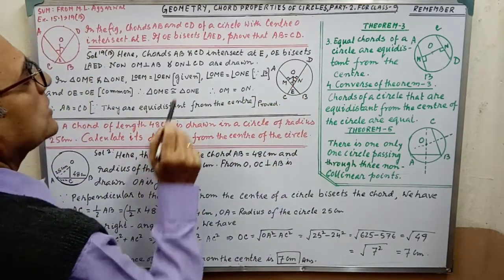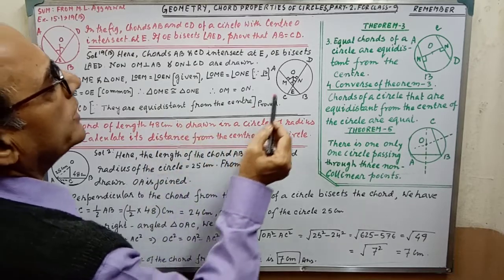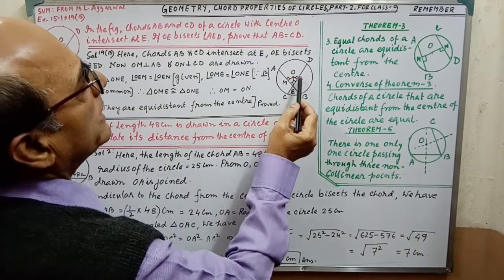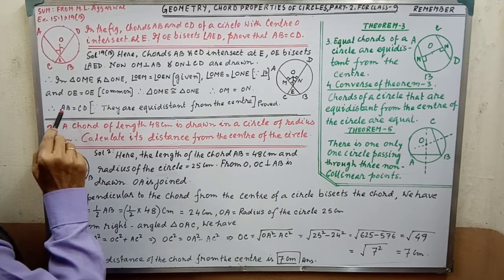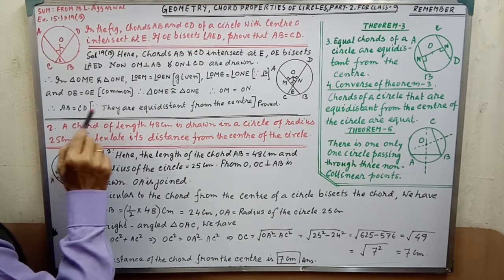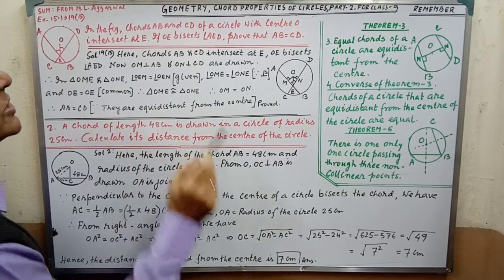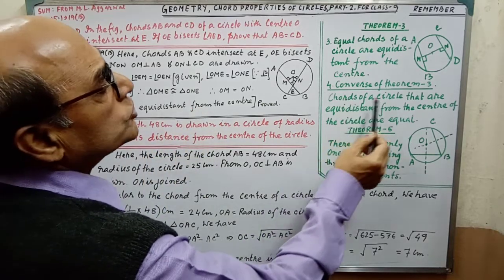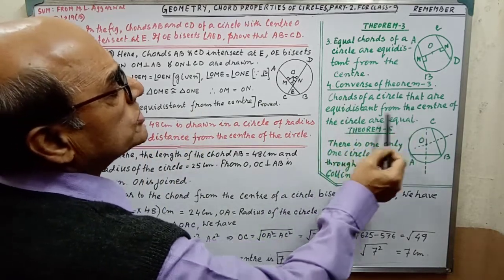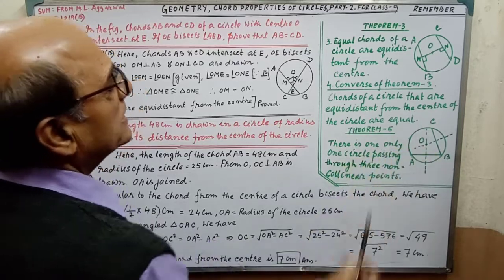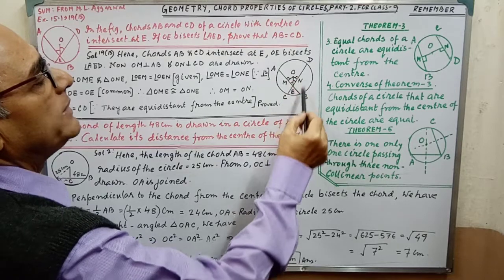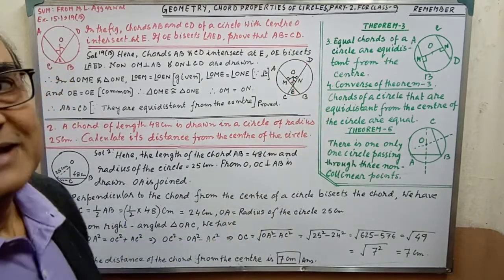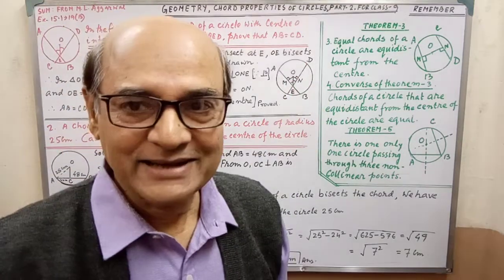Therefore, triangles are congruent. When triangles are congruent, then we may conclude OM equal to ON. This is why we may conclude AB equal to CD, since they are equidistant from the center. Chords of a circle that are equidistant from the center of the circle are equal. Since they are equal distance, so AB equal to CD. The sum is completed.